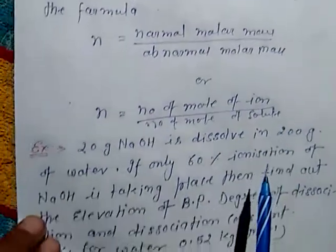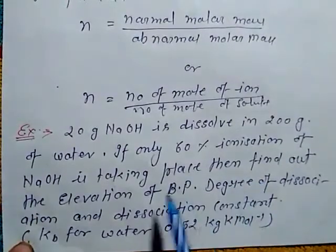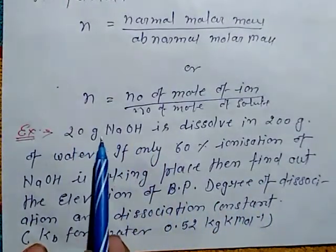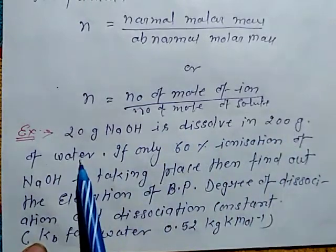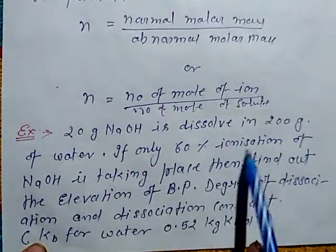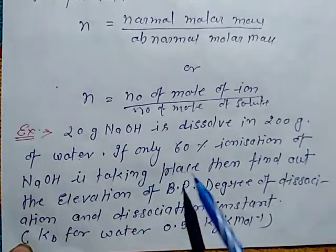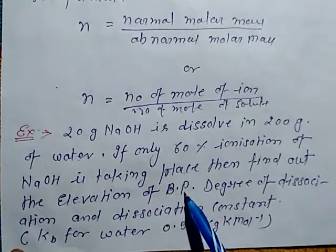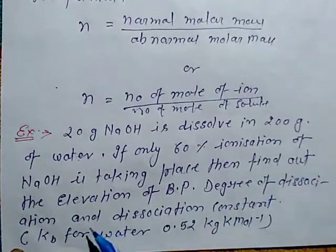Worked example: 20 g of NaOH is dissolved in 200 g of water. If only 60% ionization of NaOH is taking place, find the elevation of boiling point, degree of dissociation, and dissociation constant.